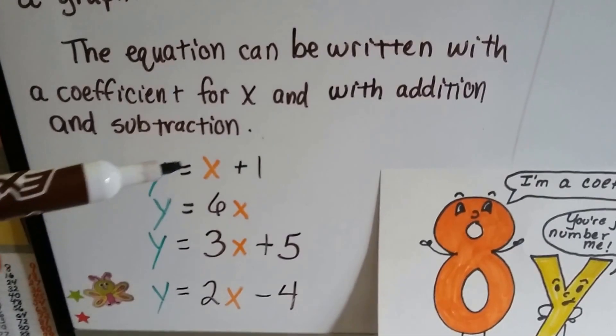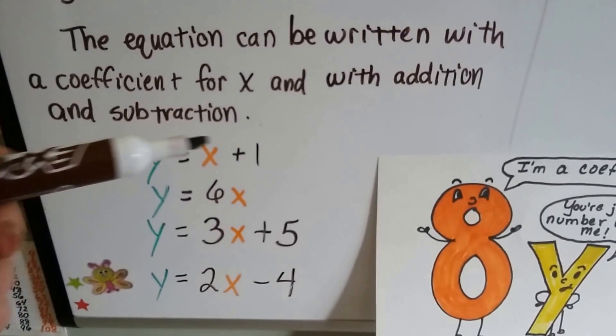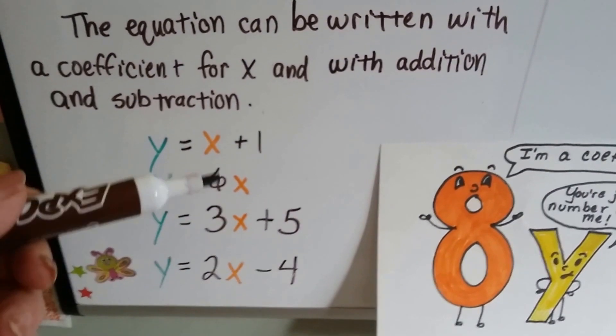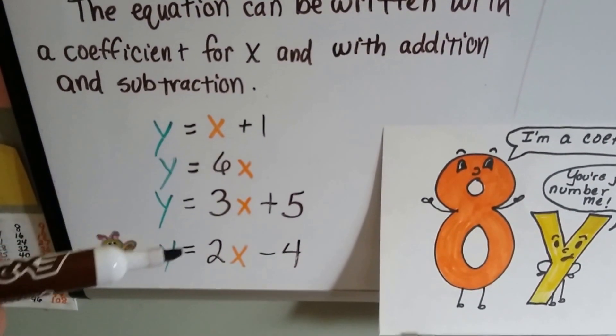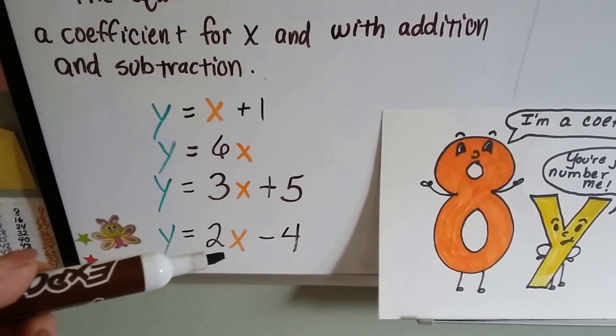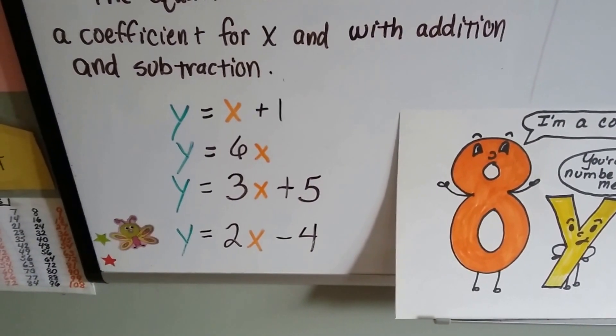So it could be written as y equals x plus 1 with addition, or y equals 6x with just a coefficient, or it could be written with a coefficient and addition or a coefficient and subtraction. So let's take a look at this first one.